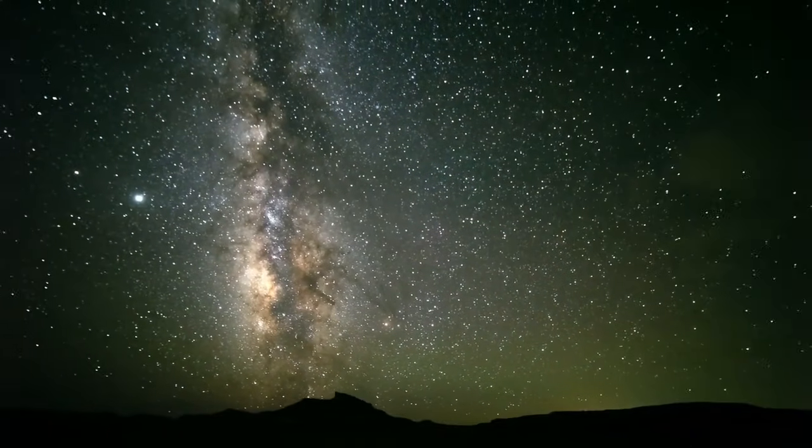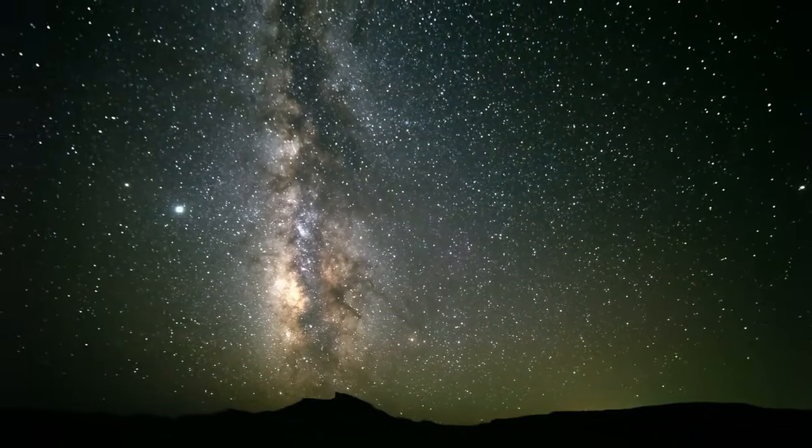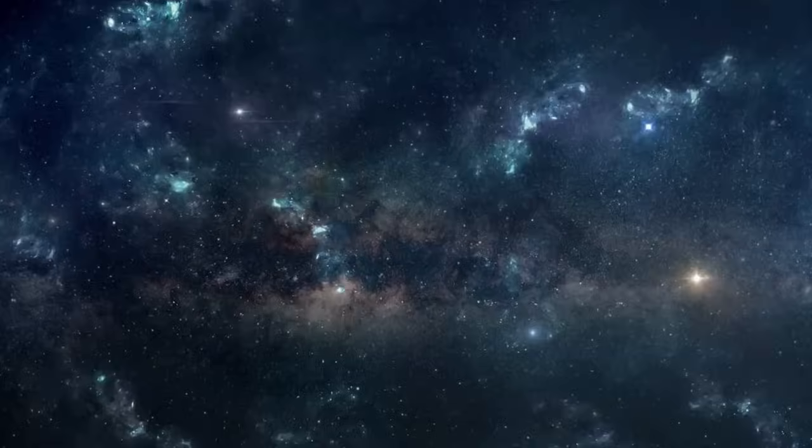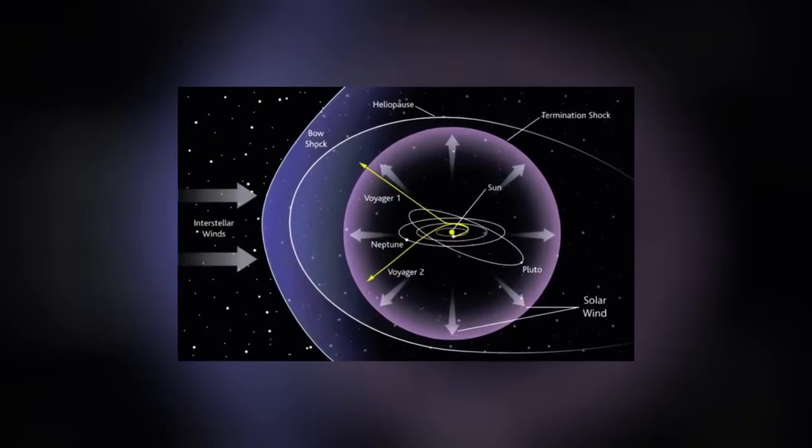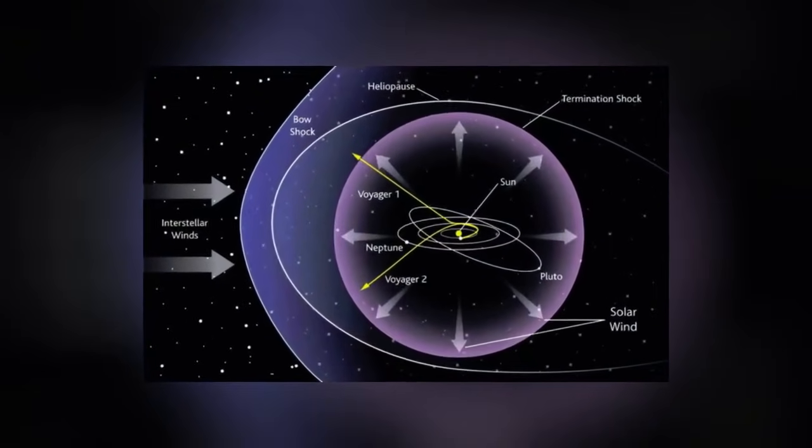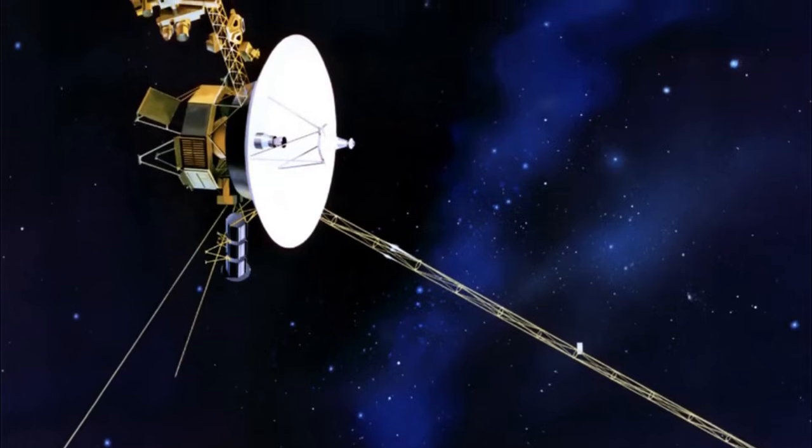Outer space continues to defy our expectations, and Voyager 2's observations as it crossed the heliopause, the boundary between the heliosphere and interstellar space, are shedding light on some of the solar system's greatest mysteries.